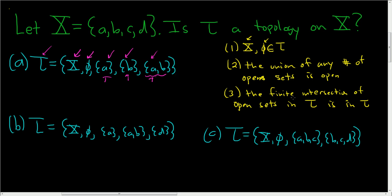What about the third condition? The finite intersection of open sets in tau is in tau. Well, if you take the intersection of, say, A intersected with AB, you just get back A, and that's certainly in tau, and you can play the same game with B. So it looks like there's no issues here. The answer is yes, this is going to be a topology on X. Let's go ahead and do part B.